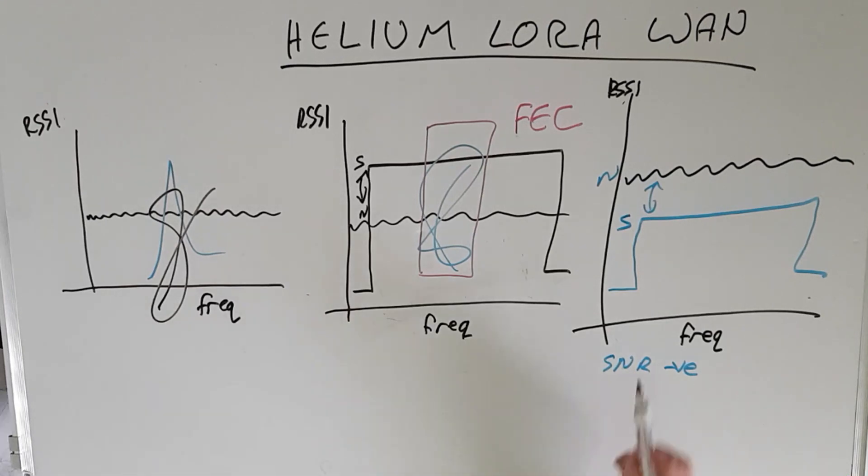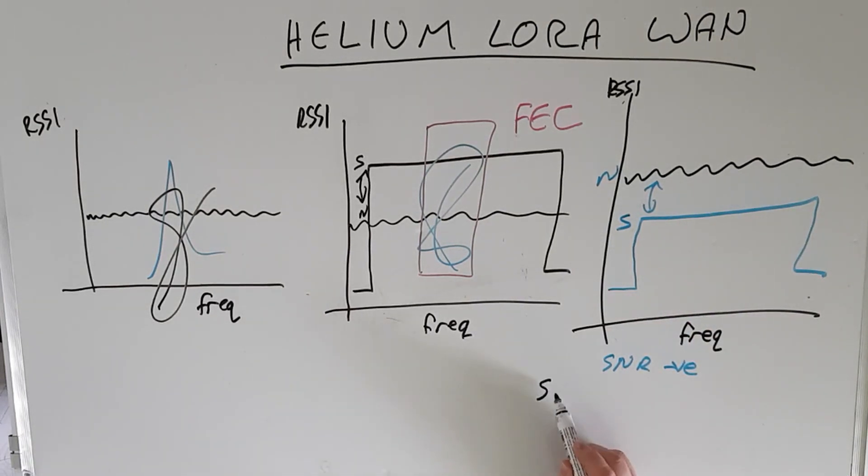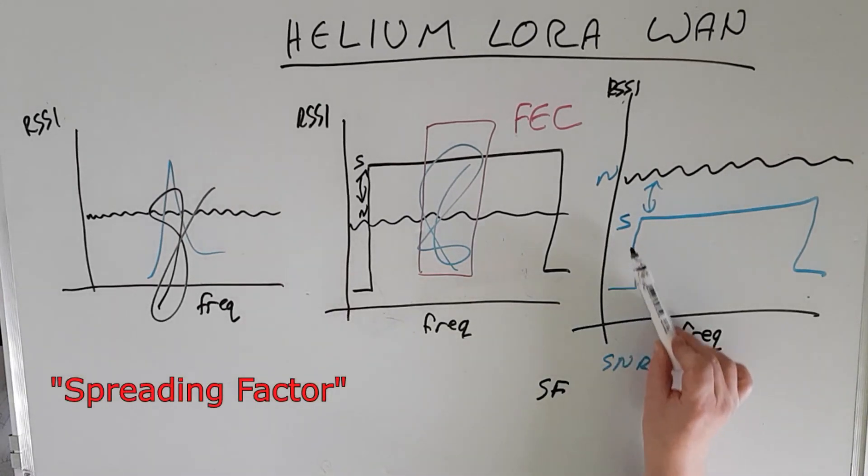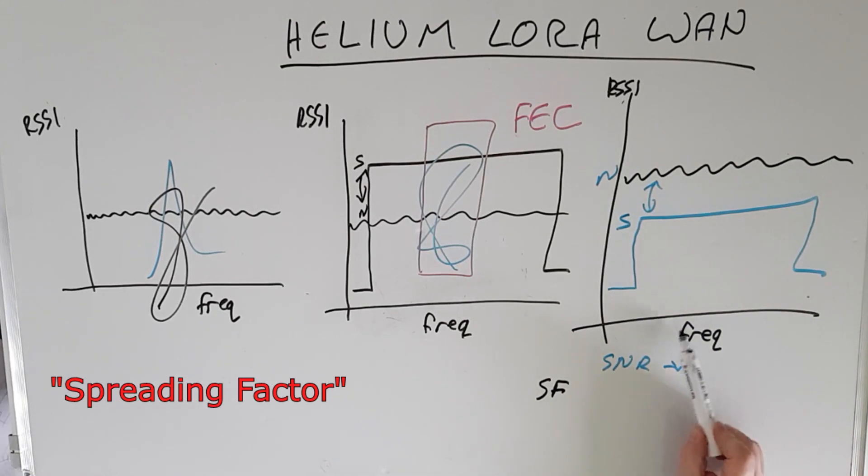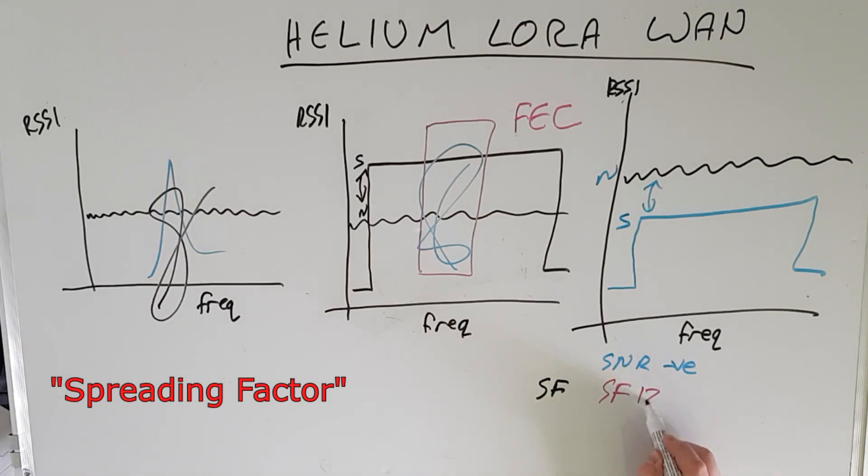Now how much smaller this signal can be relative to the noise depends on what's called the spreading factor. The spreading factor is the amount by which we spread the signal over this frequency range. Now this spreading factor can be variable. The main one used in LoRaWAN for a beacon is spreading factor 12. We also use spreading factor 7.